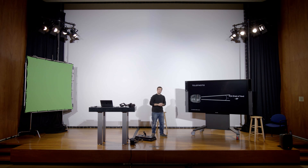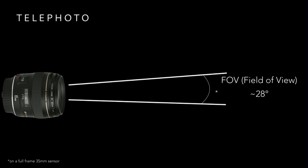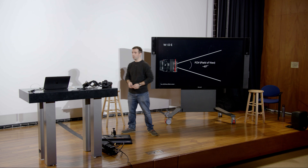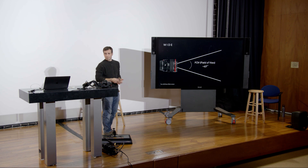A telephoto lens is anything zoomed in — this 85mm lens has a field of view of about 28 degrees on a full frame camera, really narrowing things down. A wide angle lens is the opposite: a 35mm gives about 60-63 degrees field of view. Which you choose depends on what story you're going to tell and how much of an area you need to see.